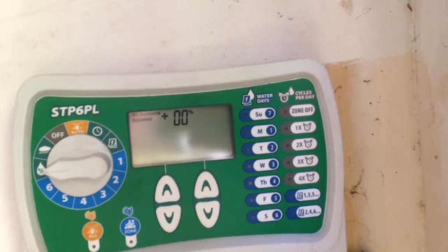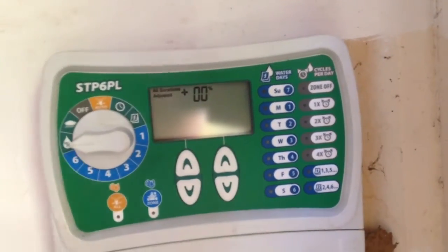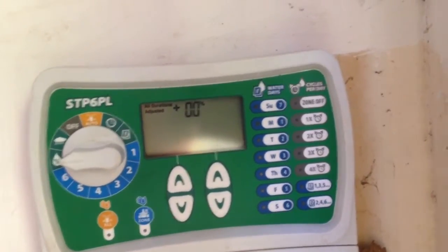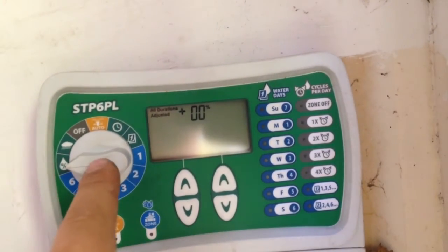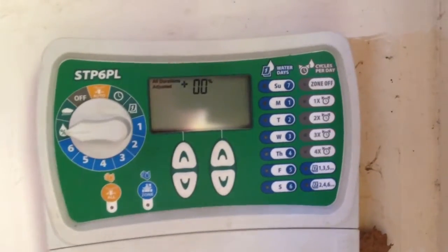Same thing in the fall. Just dial it back. It will change all the zones together instead of changing individual adjustments. If you have just one area that's dry or wet, adjust it individually. Use the seasonal percentage to adjust throughout the season.